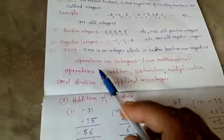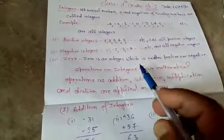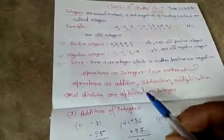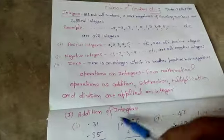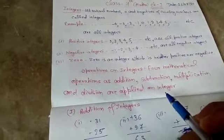See other terms related to this chapter. Operations on integers. Four mathematical operations as addition, subtraction, multiplication and division are applied on integers. Please see one by one carefully.